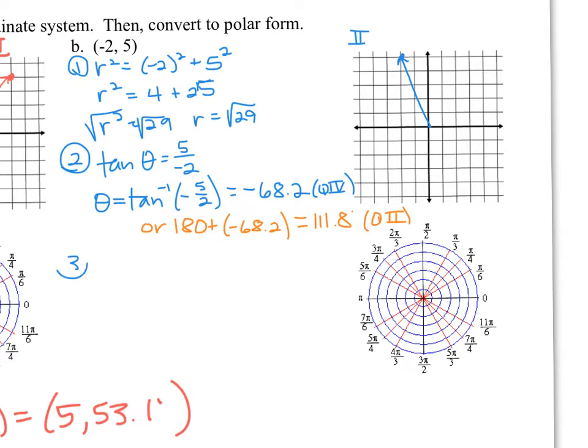Step 3, we just write out our ordered pair in polar form. Instead of xy, we now have r, theta, square root 29, comma, 111.8. And our goal is to be very similar to what our rectangular graph looked like.